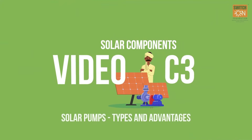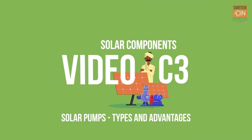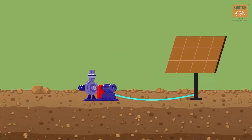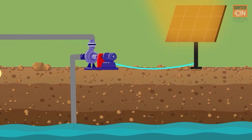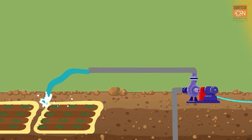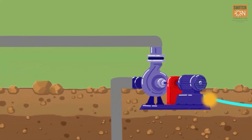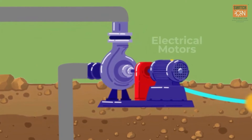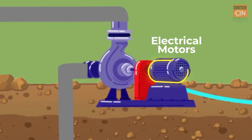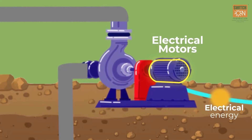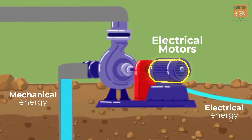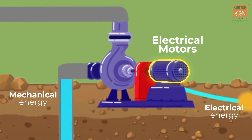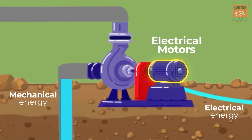The pump does the main job in the system, that is pumping out water from its source to the target field. Water pumps are driven by electrical motors that convert electrical energy into mechanical energy. It is this mechanical energy that enables the pump to take out water.